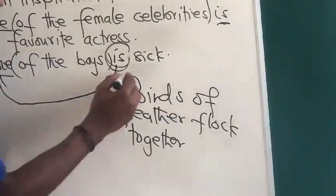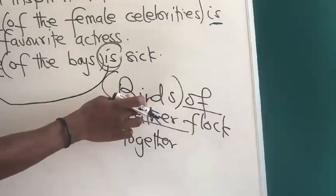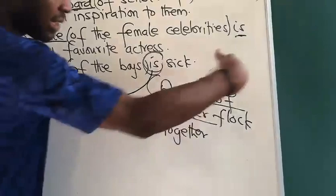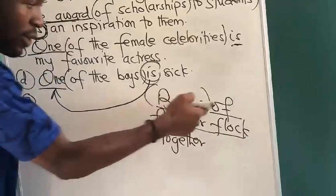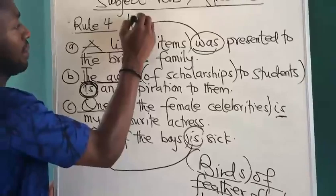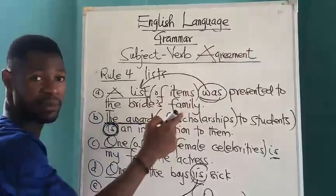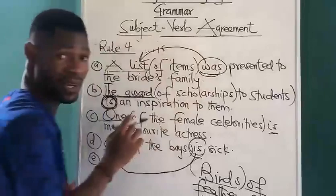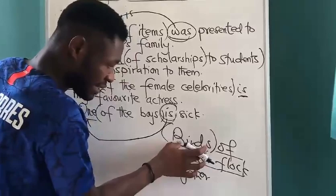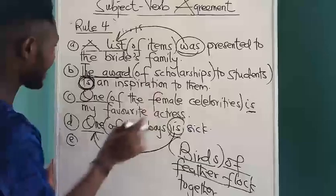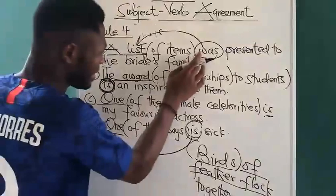If you look at 'birds of a feather flock together' — 'birds' is plural already. Here we have a plural subject followed by whatever, so 'birds' is plural and the verb will not take S. 'Birds of a feather flock together.' If we have 'lists' — which is plural — 'of items', the verb is plural. But 'list' here is singular, therefore the verb wants to be singular. So: plural subject, plural verb; but all these like 'list', 'award', 'one' are singular subjects followed by plural modifiers — they will take a singular verb.